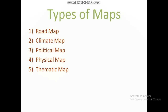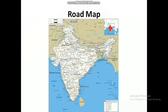Firstly, we will discuss about roadmap. A roadmap shows the different types of roads on a map, like state highway, district roads, village roads, border roads, national highway, etc. These lines on the map show different roads.